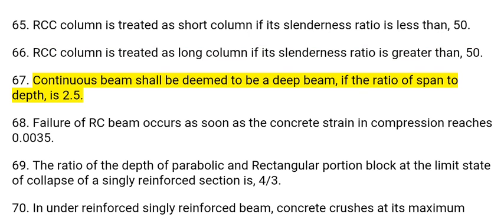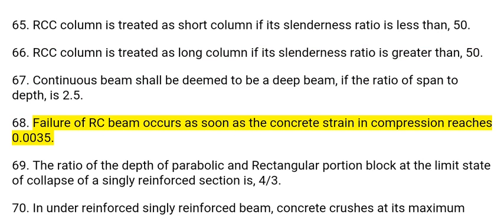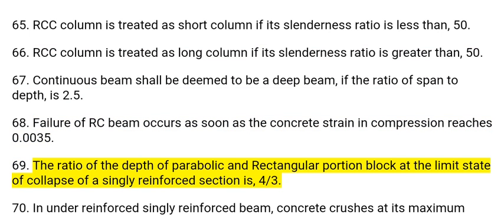67. A continuous beam shall be deemed to be a deep beam if the ratio of span to depth is 2.5. 68. Failure of an RCC beam occurs as soon as the concrete strain in compression reaches 0.0035. 69. The ratio of the depth of the parabolic and rectangular portion of the stress block at the limit state of collapse of a singly reinforced section is 4/3.